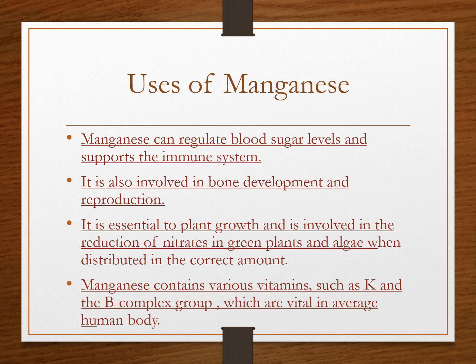Manganese can regulate blood sugar levels and supports the immune system. It is also involved in bone development and reproduction. It is essential to plant growth and is involved in the reduction of nitrates in green plants and algae. Manganese also contains various vitamins such as K and B complex group, which are vital for the average human body.